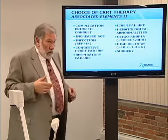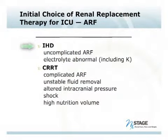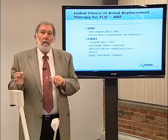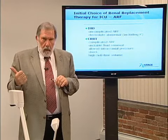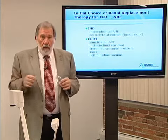Based on all of these elements, intermittent therapy would be much better suited for uncomplicated acute kidney injury — no major problems, with electrolyte abnormalities like potassium being manageable. Continuous therapy is much more appropriate for complicated acute kidney injury — those with longer duration, volume dysfunction, or higher nutritional needs. The patient's characteristics and clinical elements will drive your decision between intermittent and continuous therapy.